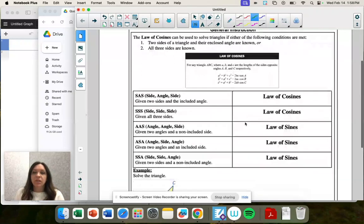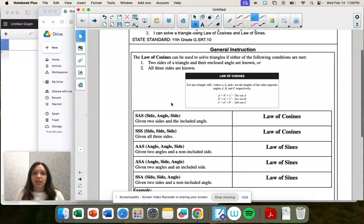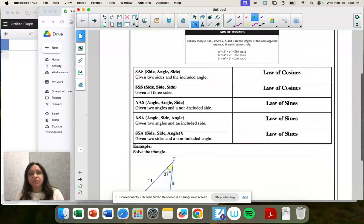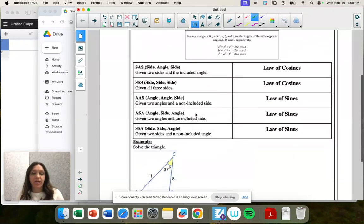So we use law of cosines when we're given side angle side. So that's when we have two known sides and the inner known angle. Or we only have the side lengths and no angles. So that's called a side, side, side. And then the other ways we can use law of sines, which is something we already have learned.